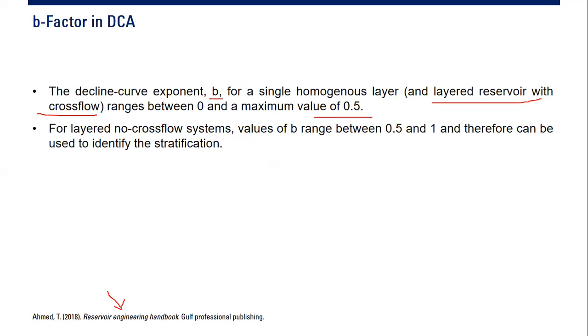However, for layered no-crossflow systems, values of b range from 0.5 to 1 and therefore can be used to identify stratification. So if you have stratified reservoir, layered reservoir with no crossflow, you can have b-factor from 0.5 to 1. B-factor can be a very interesting indication of the characteristic of your reservoir.